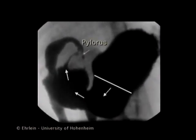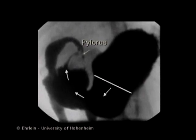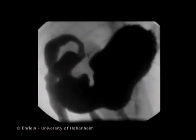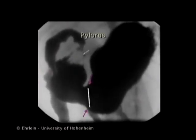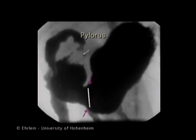The peristaltic waves originate at the gastric body and propagate towards the pylorus. When the peristaltic wave reaches the antrum, the constriction of the wave becomes deeper.